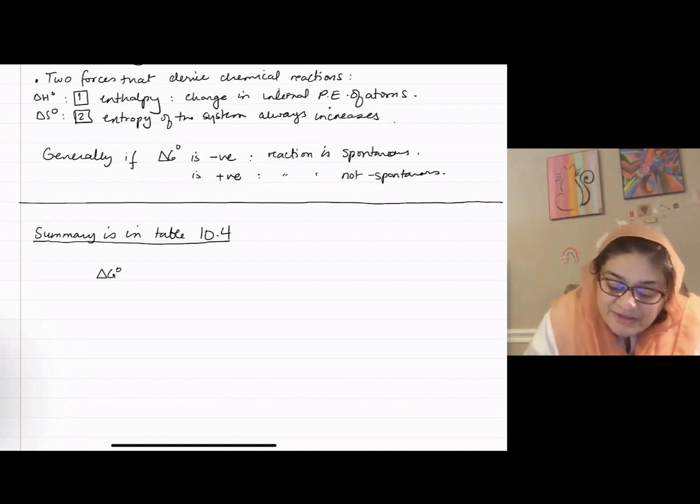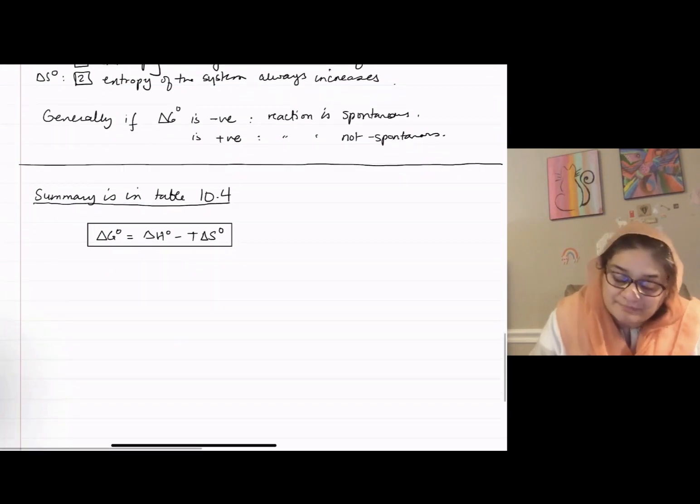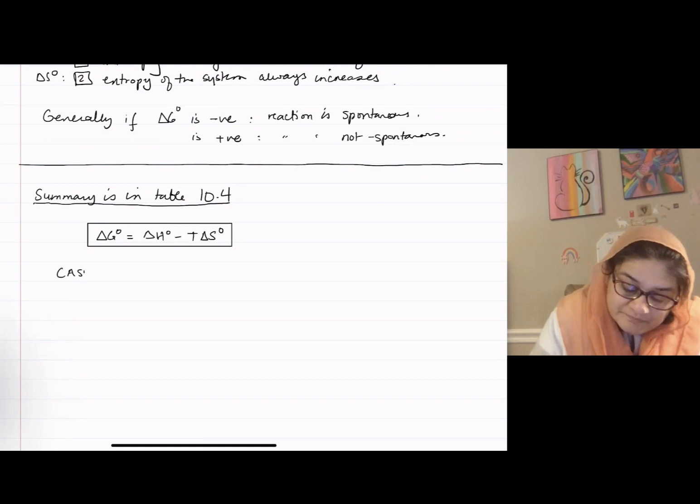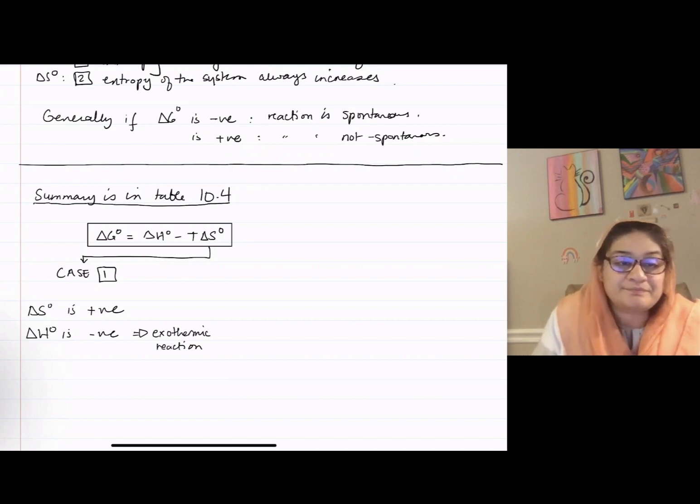We know ΔG° equals ΔH° minus TΔS°. Case one: suppose ΔS° is positive and ΔH° is negative. ΔH° negative implies this is an exothermic reaction. What's an exothermic reaction?